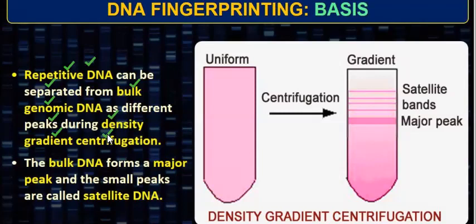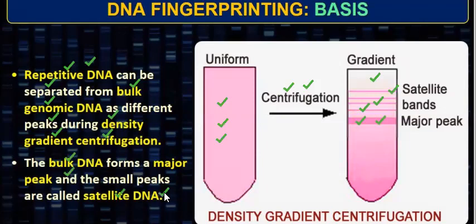How do we do the separation? If we have repetitive DNA, we can separate it from bulk DNA. Repetitive DNA is known as satellite DNA, and satellites are of different types — mini and micro satellites. I have taken the DNA in a test tube, which was uniform. When I centrifuged this DNA, separation happened according to the gradient. This is the major peak — the bulk DNA — and these minor peaks are the satellite DNA. The bulk DNA forms the major peak and the small peaks are called the satellite DNA.